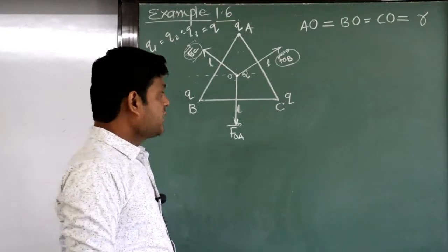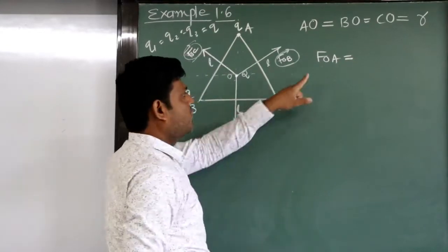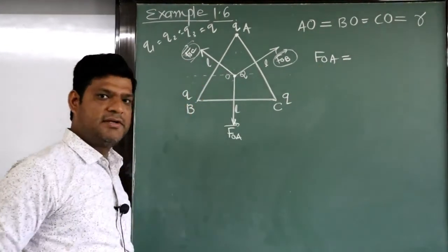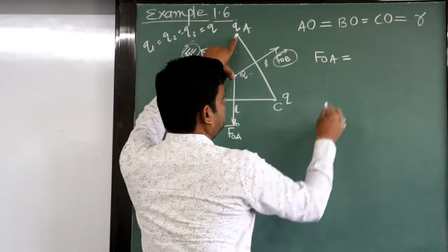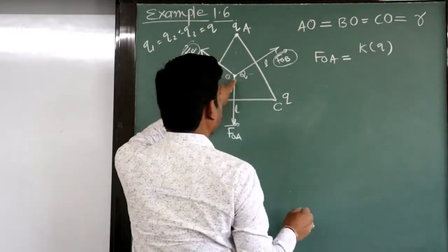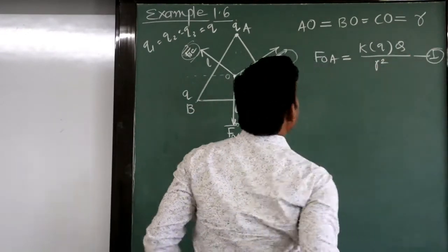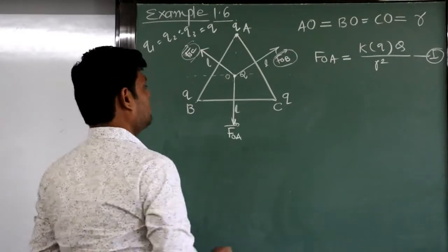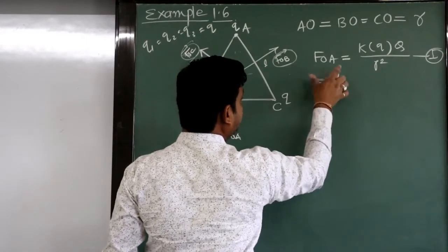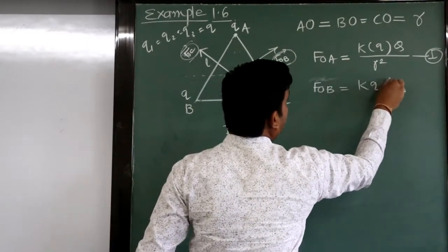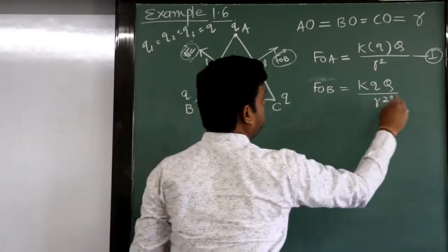First, the magnitude of force acting on O due to A: using Coulomb's law, FOA = K·Q·Q / R² — equation 1. The magnitude of force acting on O due to B: FOB = K·Q·Q / R² — equation 2. The force acting on O due to C: FOC = K·Q·Q / R² — equation 3.